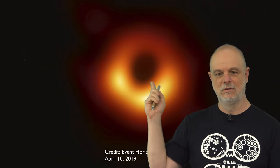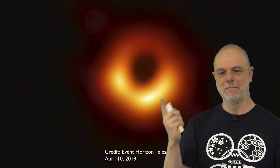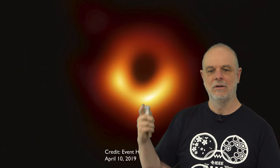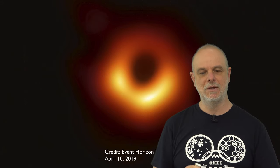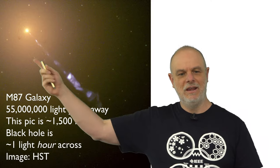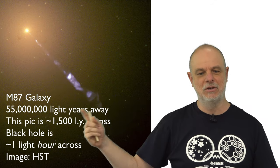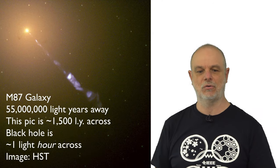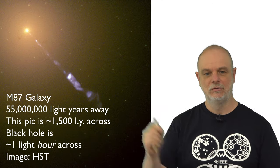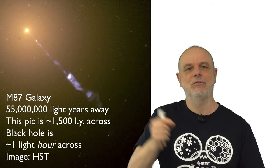So, this information, this image around the black hole here. You can see that black hole is in the middle. That black hole is about one light hour across, way up in the center of this image. And this image is 1500 light years across from a galaxy that is 55 million light years away. So, it's a little tiny thing. How did they get the resolution to do that?